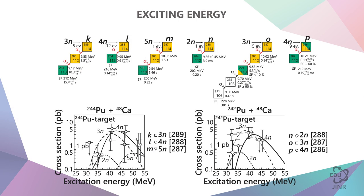Next, we will look at the dependence on energy. For this purpose, we will use two isotopes, plutonium-244 and plutonium-242. We irradiate them with calcium-48, and in the first experiment with plutonium-244, we see three types of decay chains.